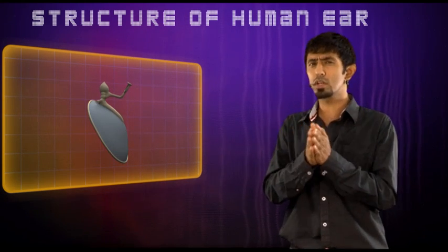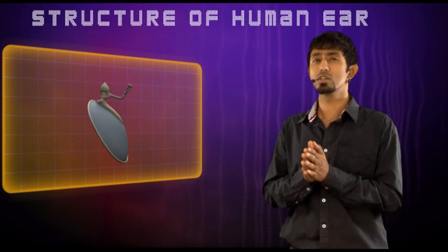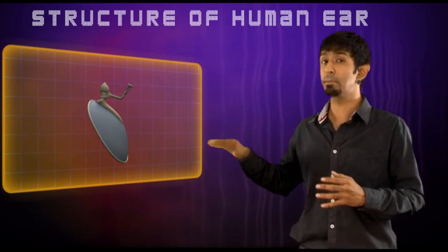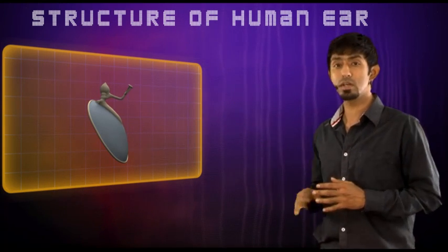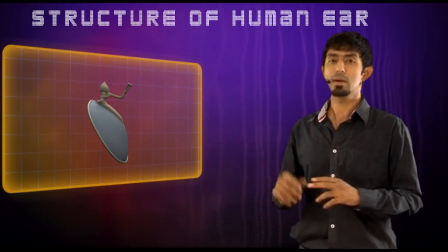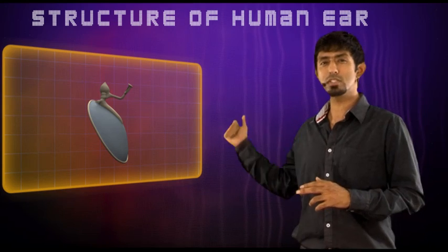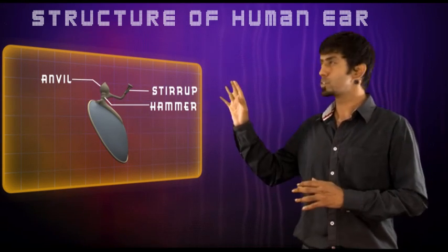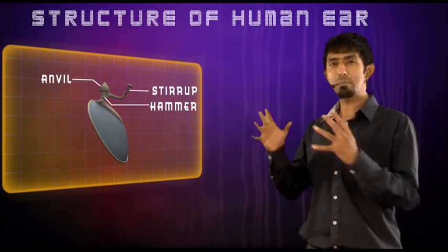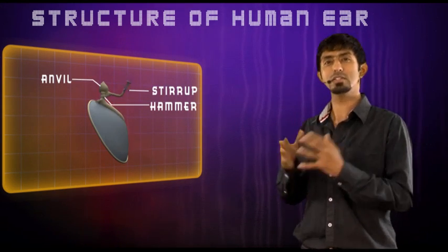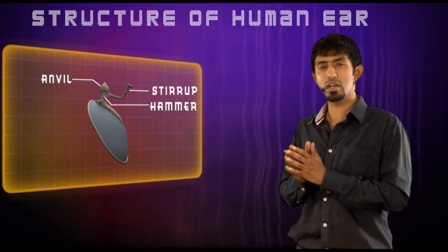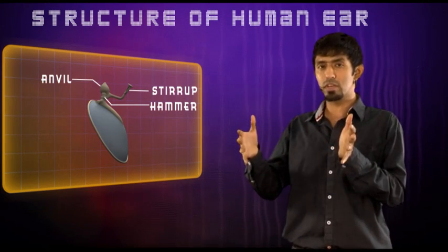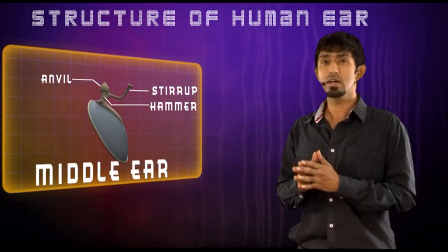That vibration alone is not much. What happens is that the compression is amplified many, many times — usually about 20 times — by three bones inside. These are called the hammer, the anvil, and the stirrup. These three bones amplify that little compression and rarefaction.